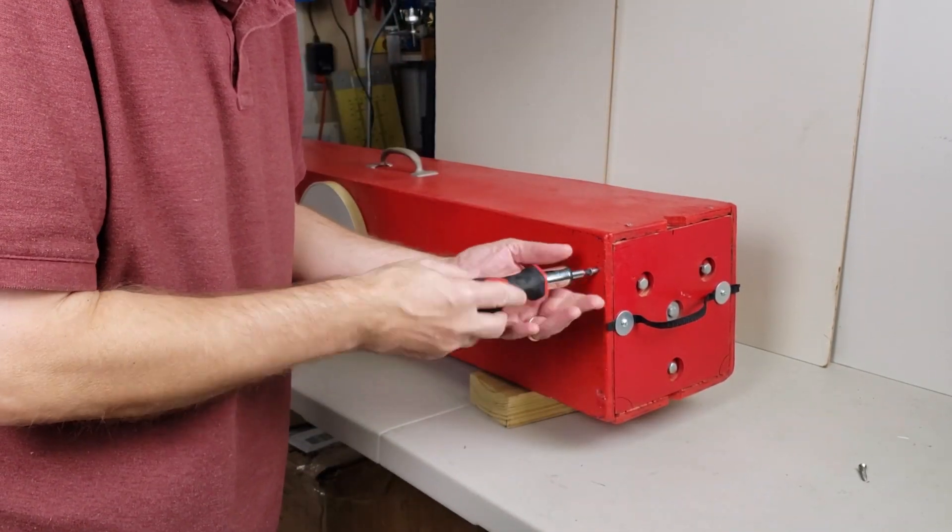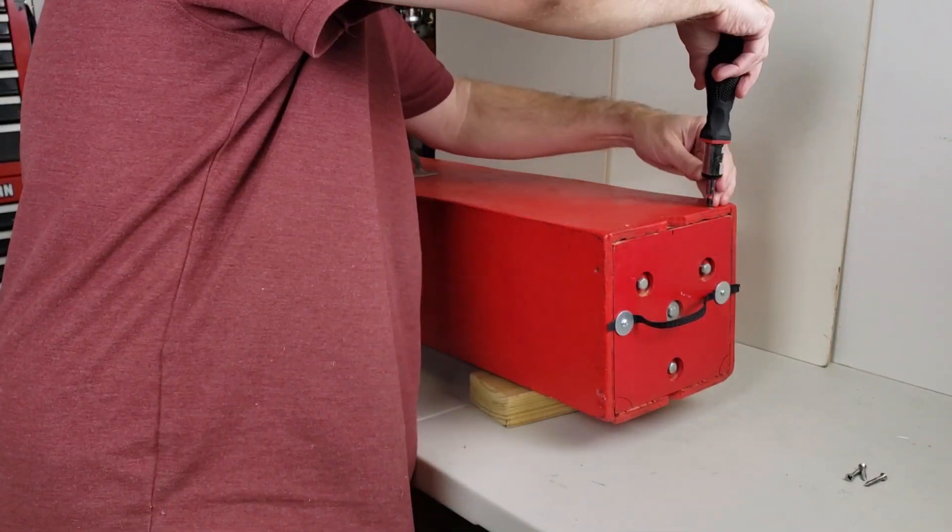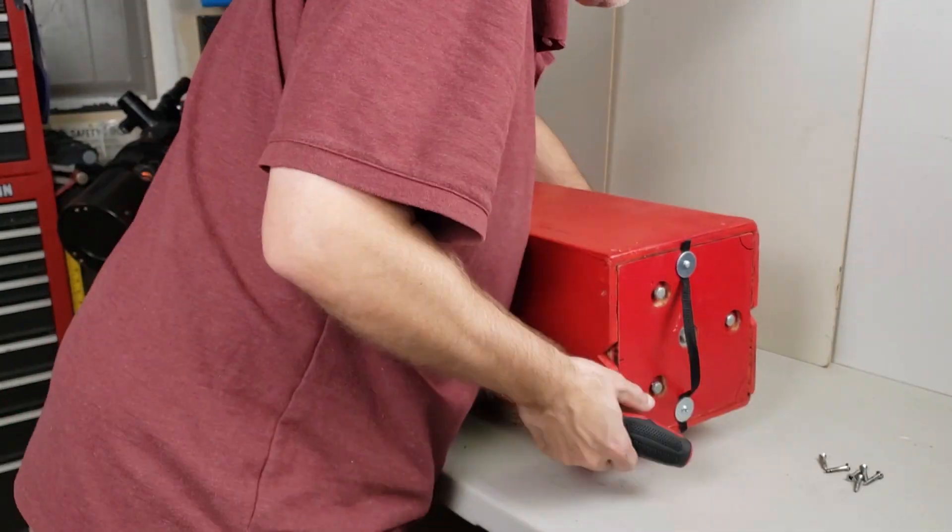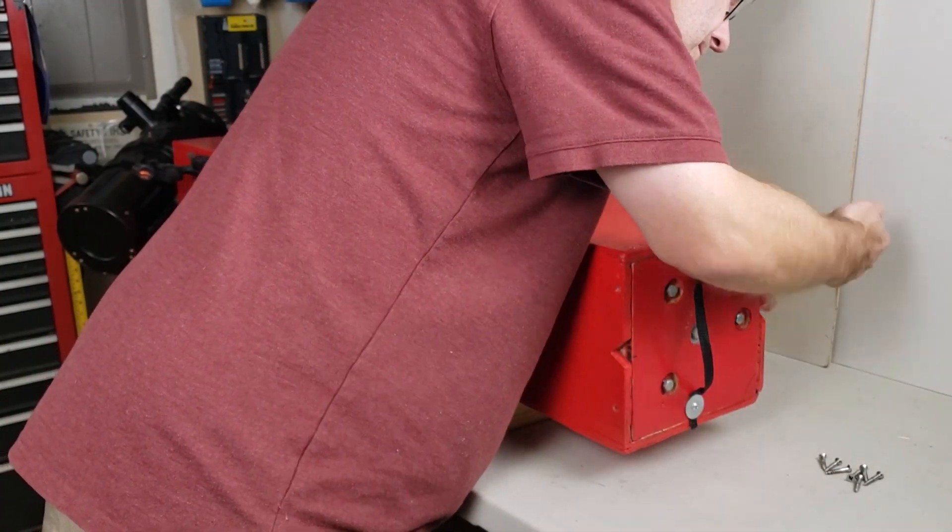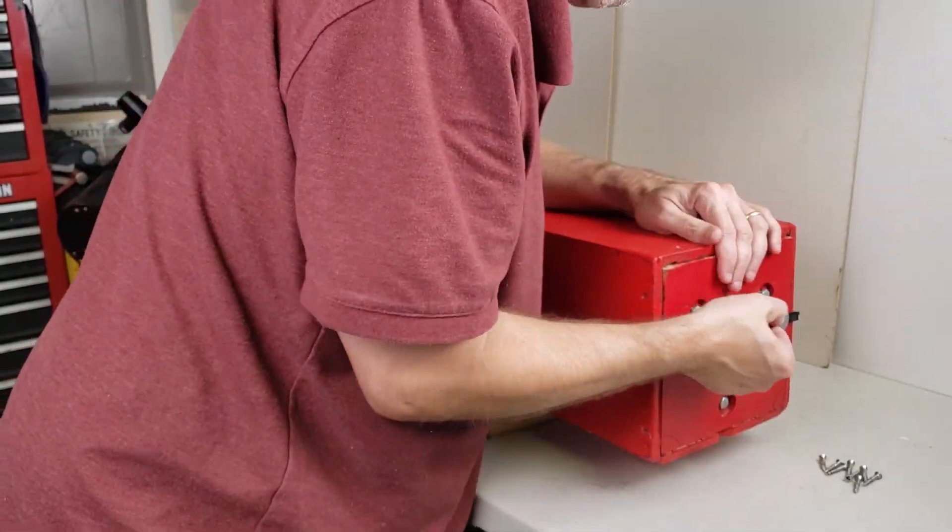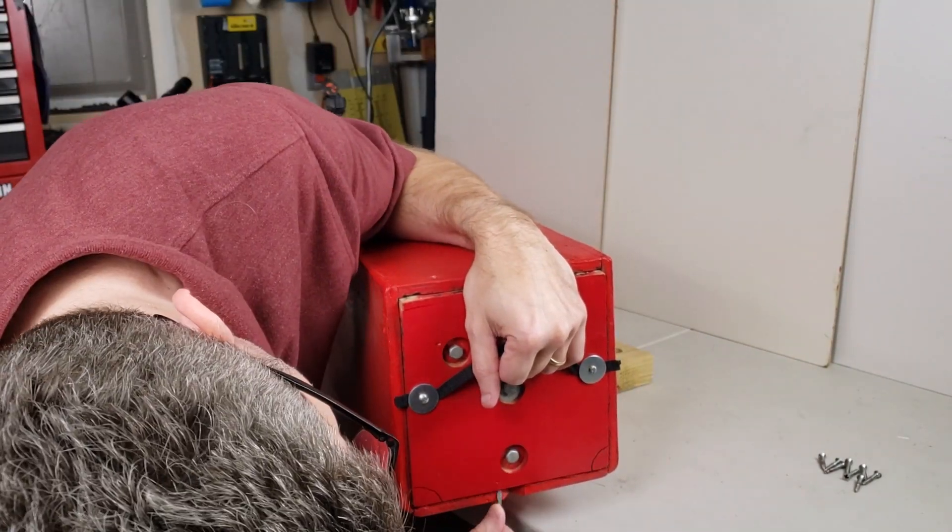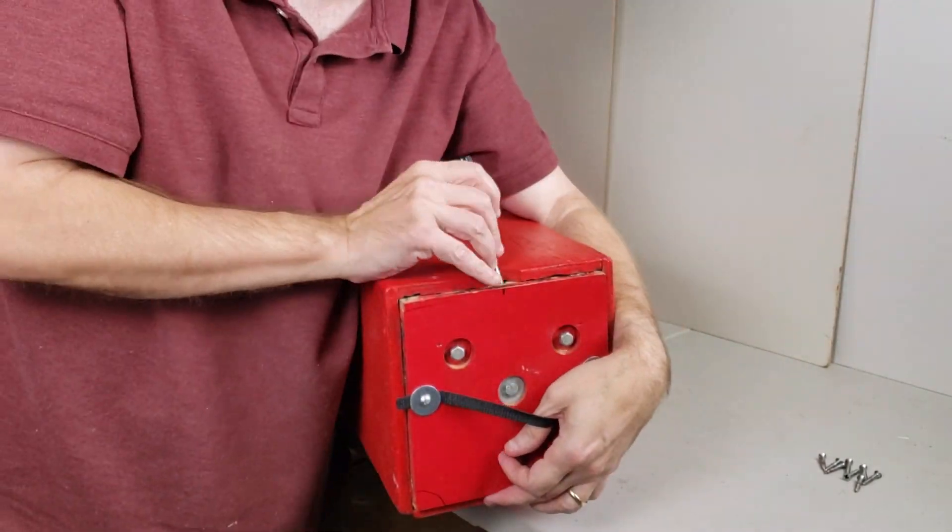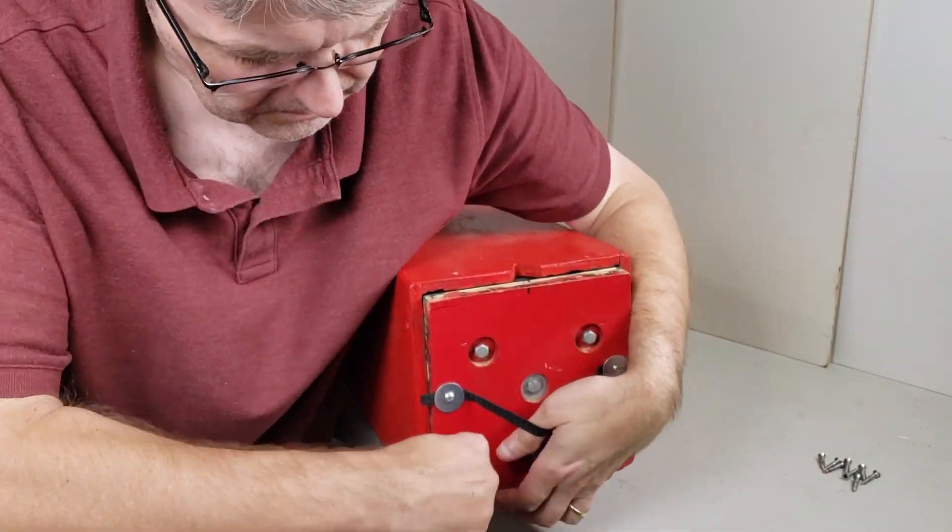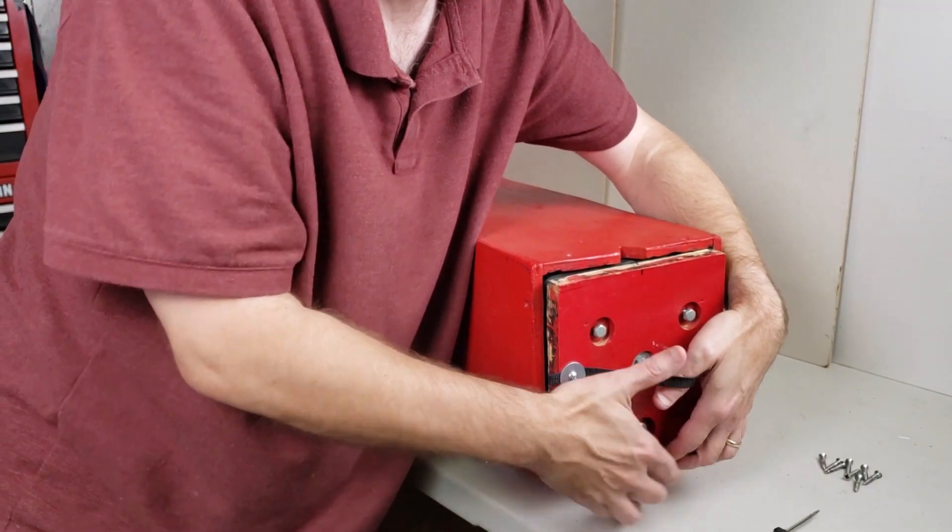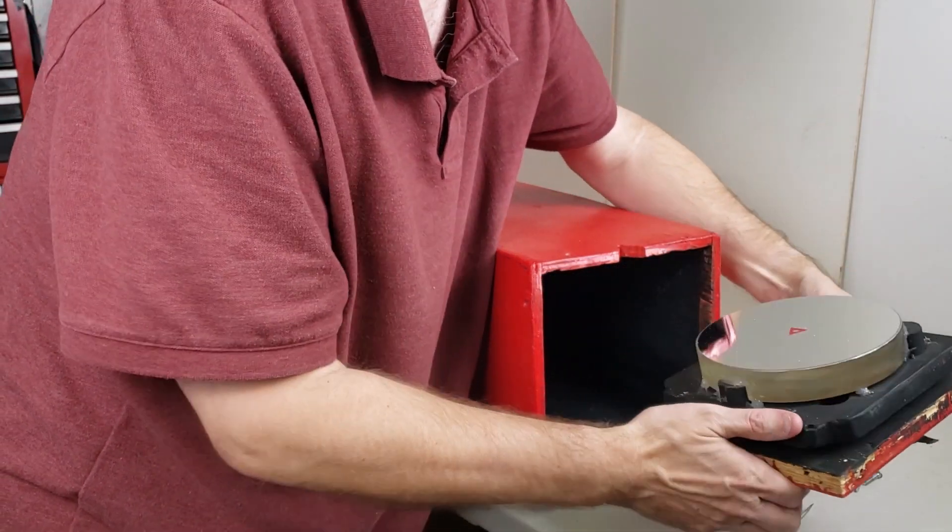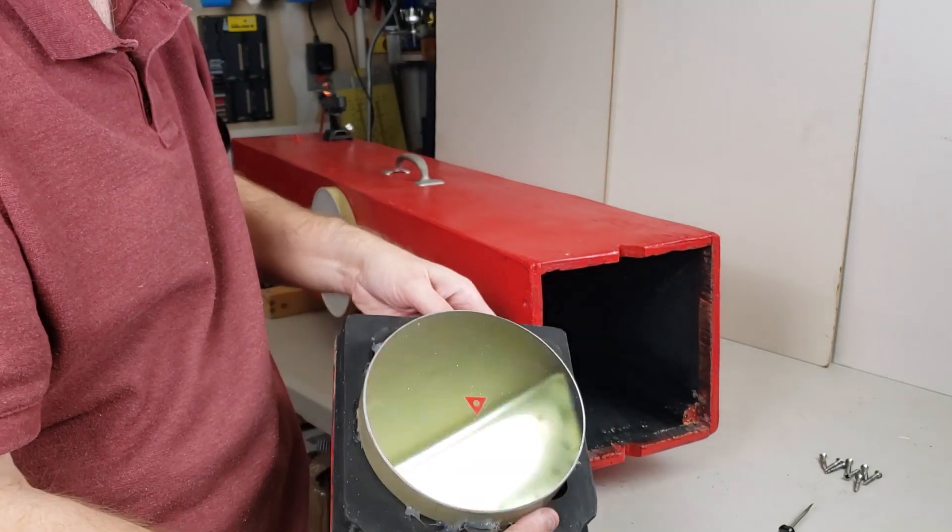Again, there are two screws on each side of the telescope box. The mirror cell is a pretty tight fit. So in addition to pulling on that handle, I usually have to use a small screwdriver to carefully pry it out of the telescope box. And there it is. Let's take a closer look.